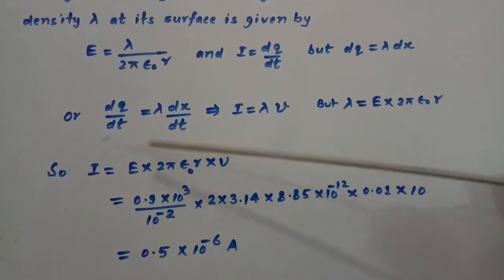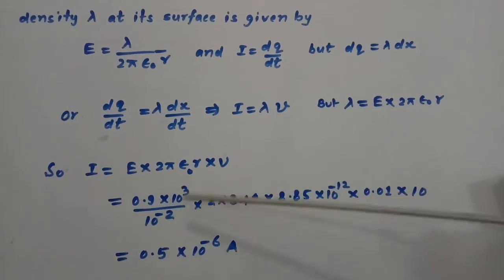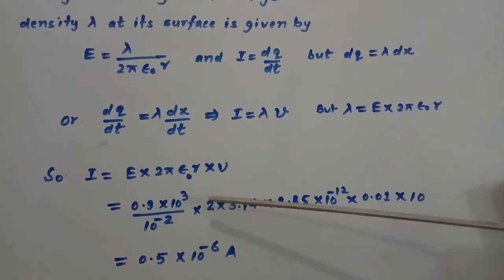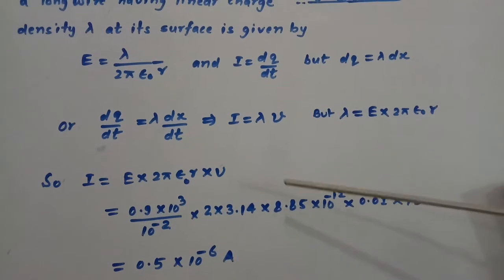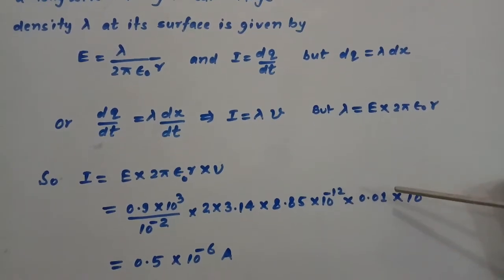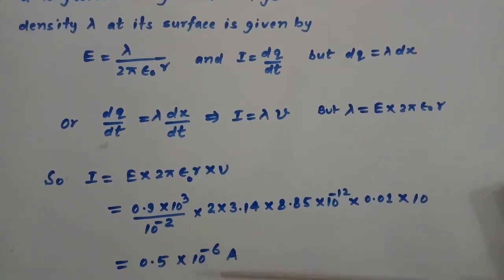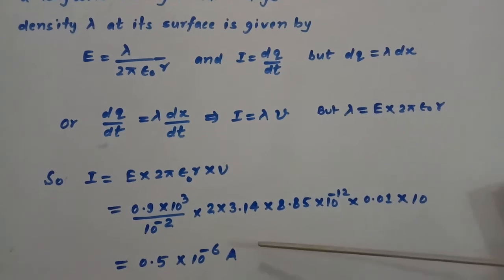In question, all values are given. So we put those values. So 0.9 into 10 power 3 divided by 10 power minus 2 times 2 into 3.14 times 8.85 into 10 power minus 12 times 0.01 times 10 equal to 0.5 into 10 to the power minus 6 ampere.